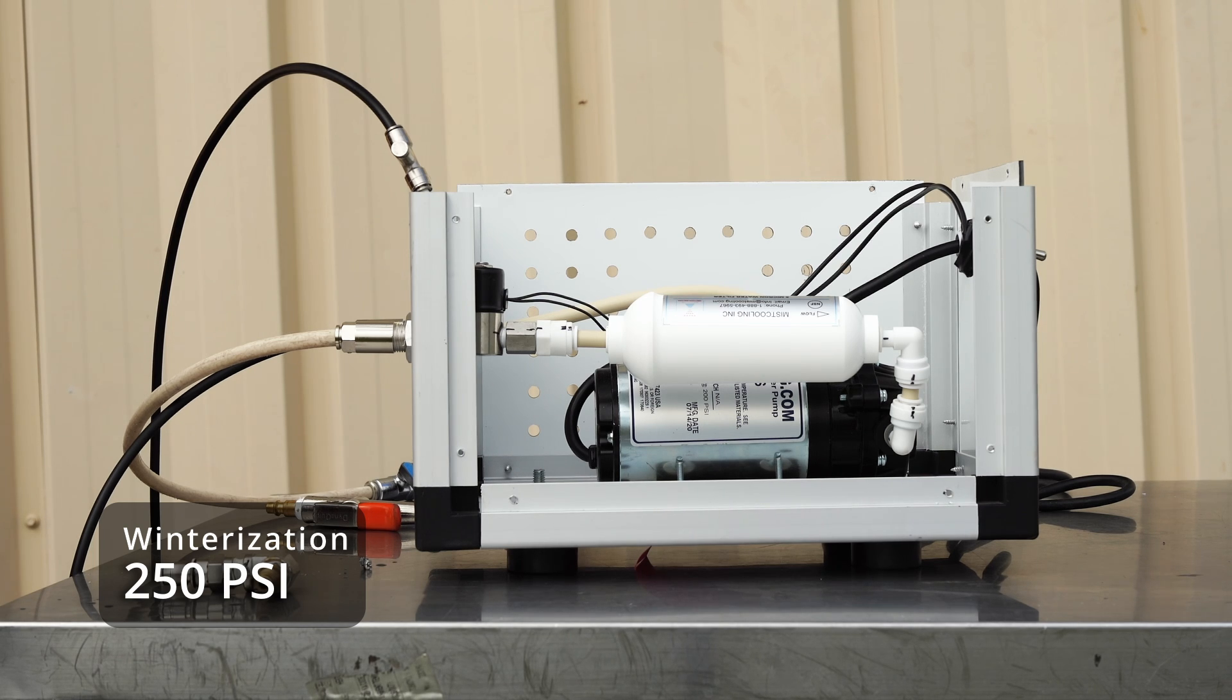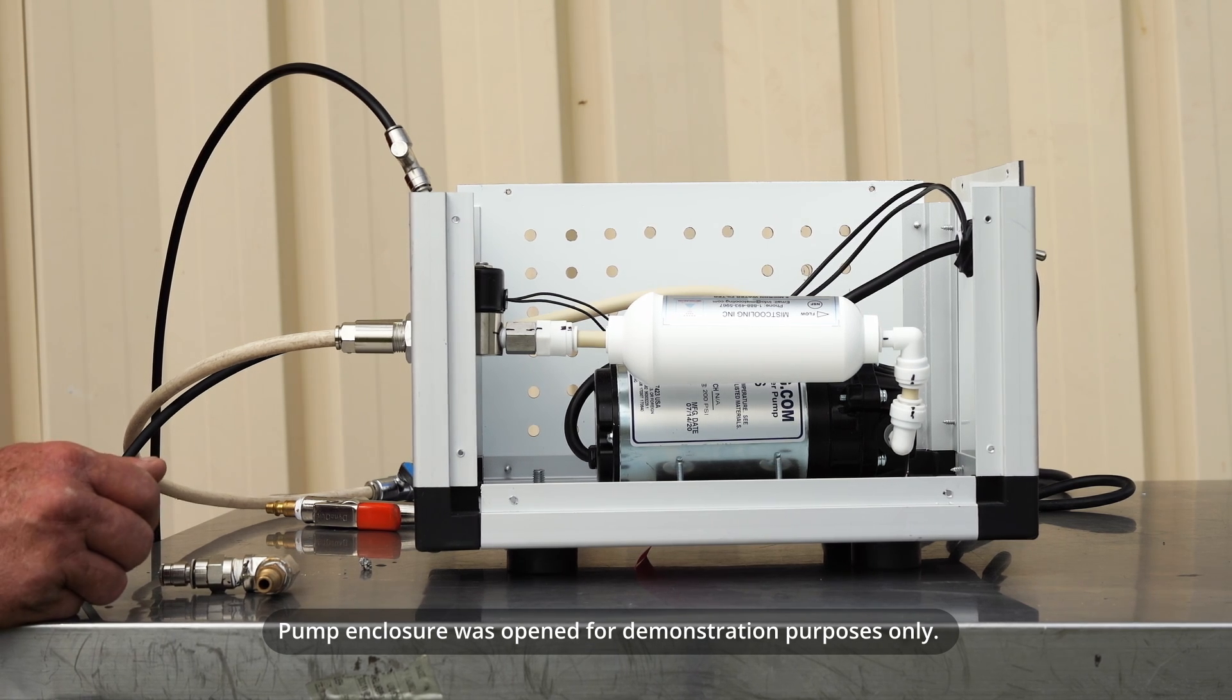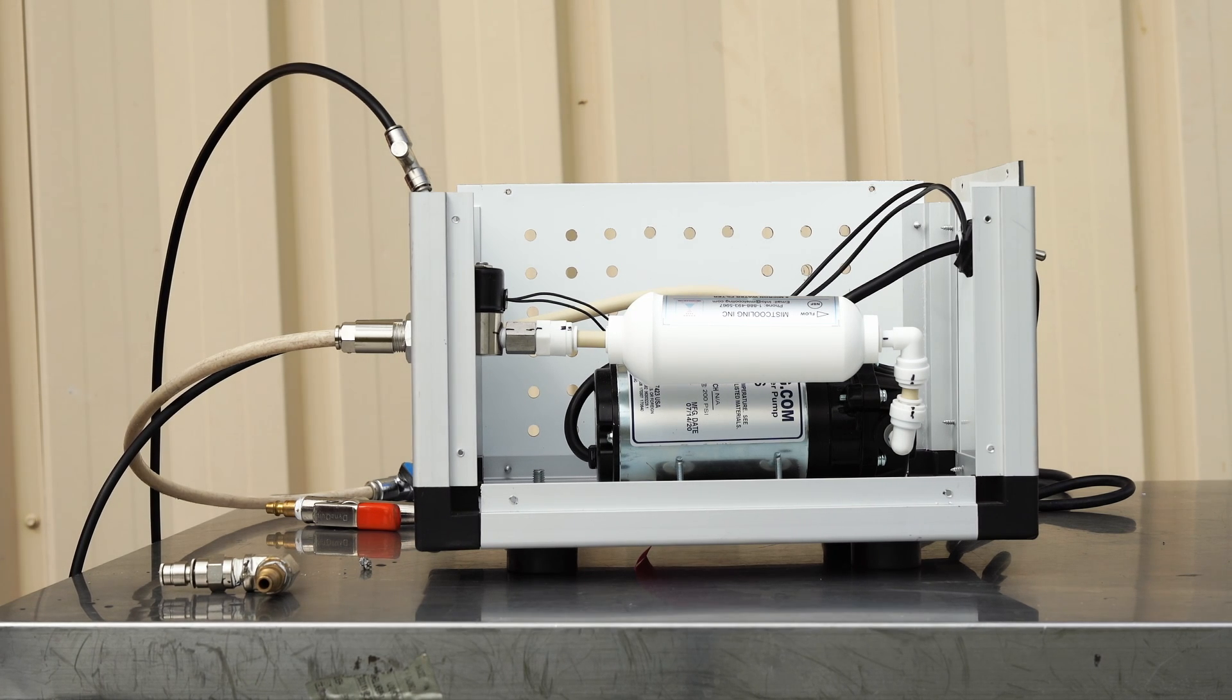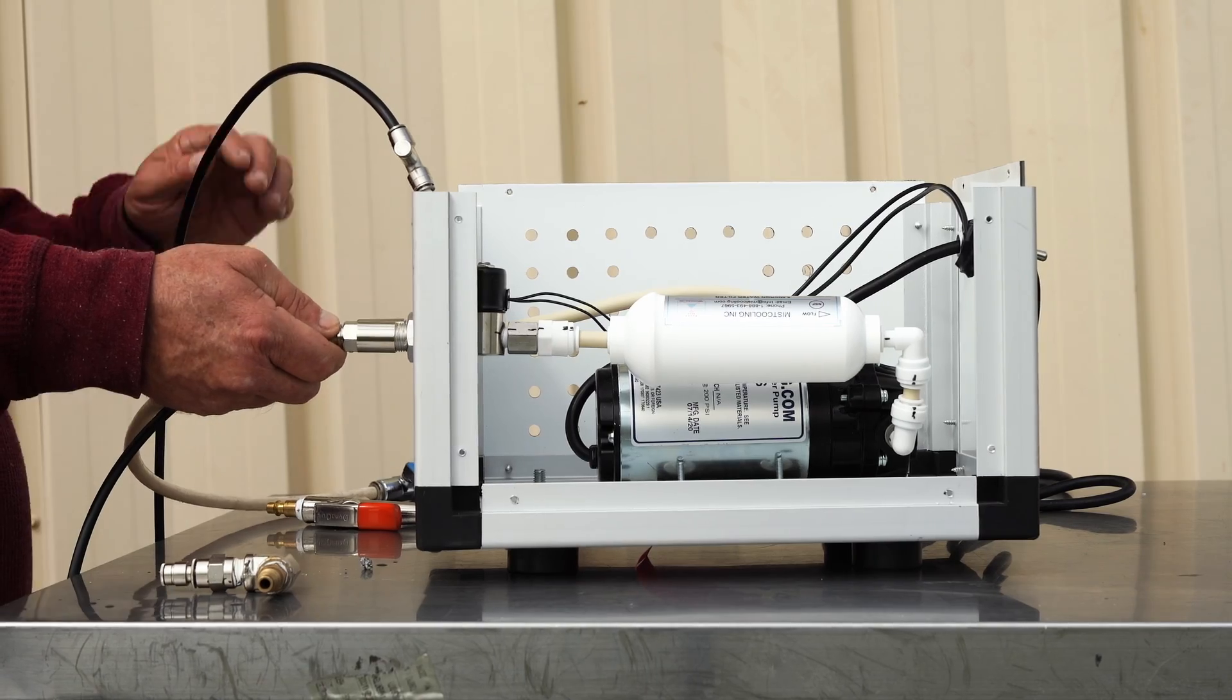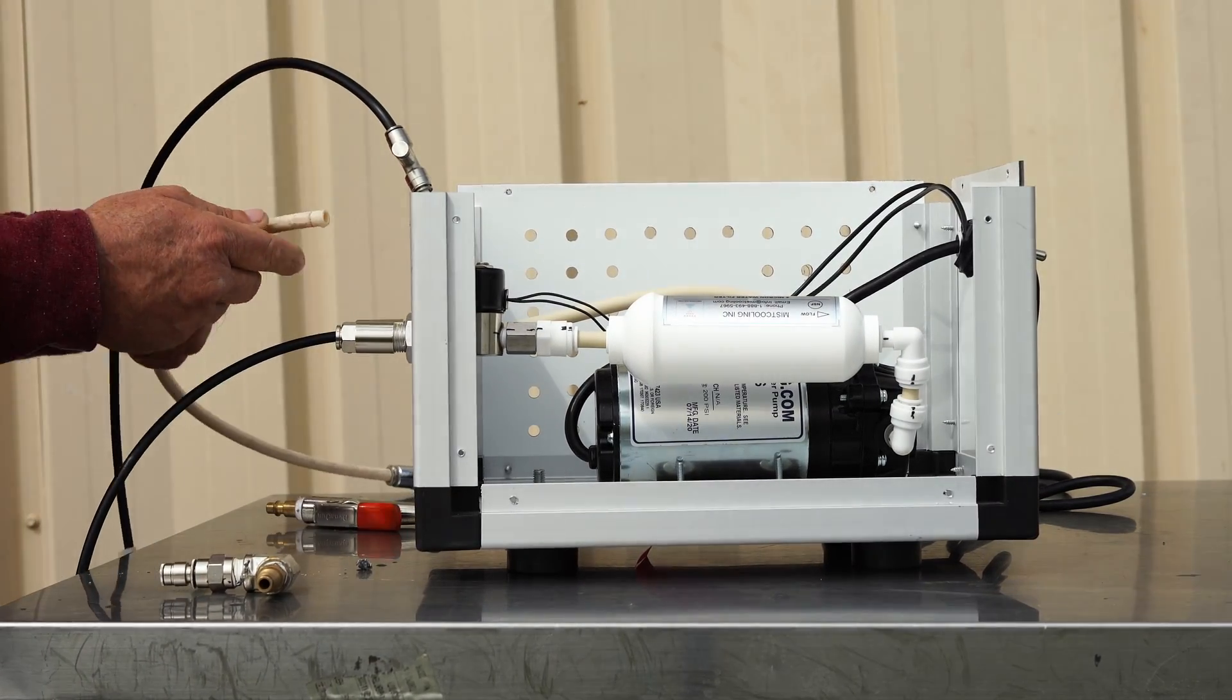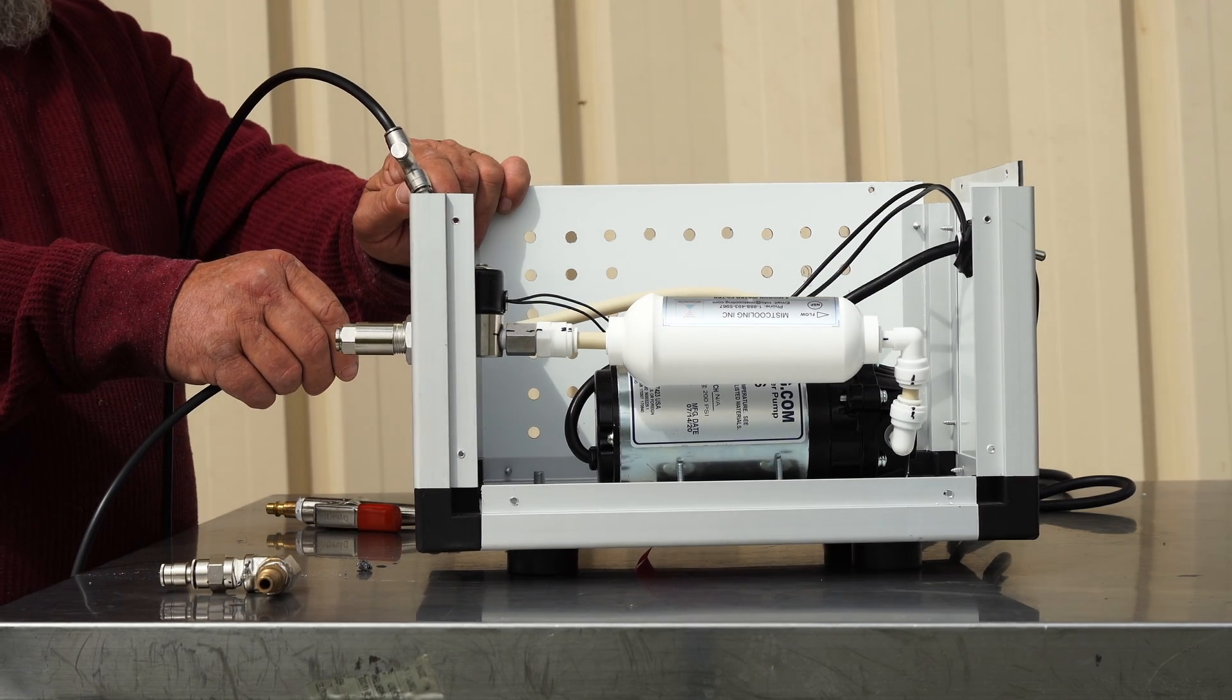We're going to show you how to winterize your 250 PSI pump. Start by turning your water off, then disconnect the inlet side and the outlet side.